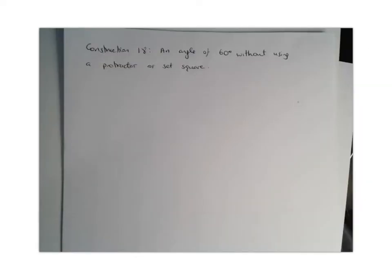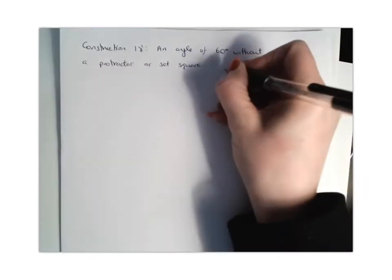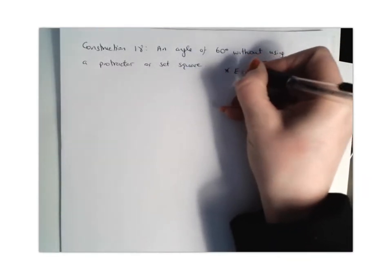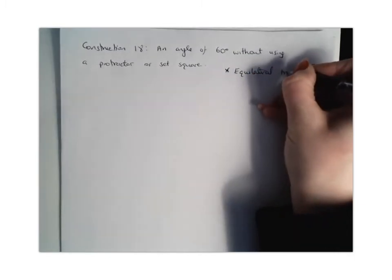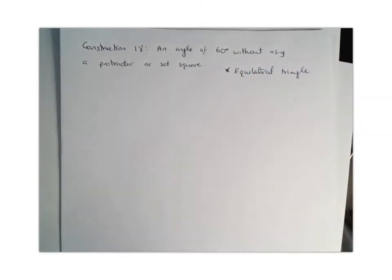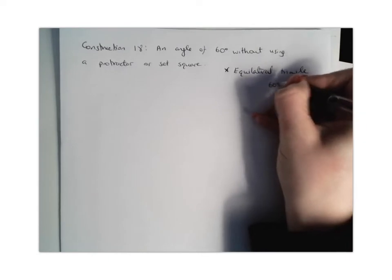So for construction 18 we want to construct an angle of 60 degrees without using a protractor or a set square. The trick for this one is we need to draw ourselves an equilateral triangle because we know in an equilateral triangle all the angles are equal so therefore they're all 60 degrees.